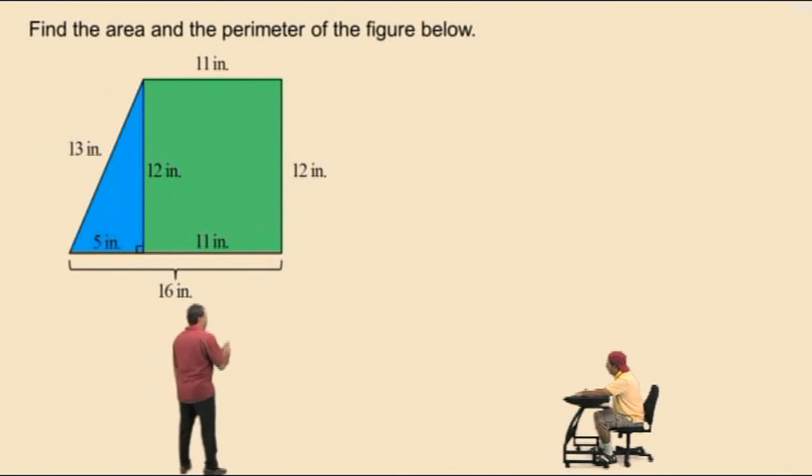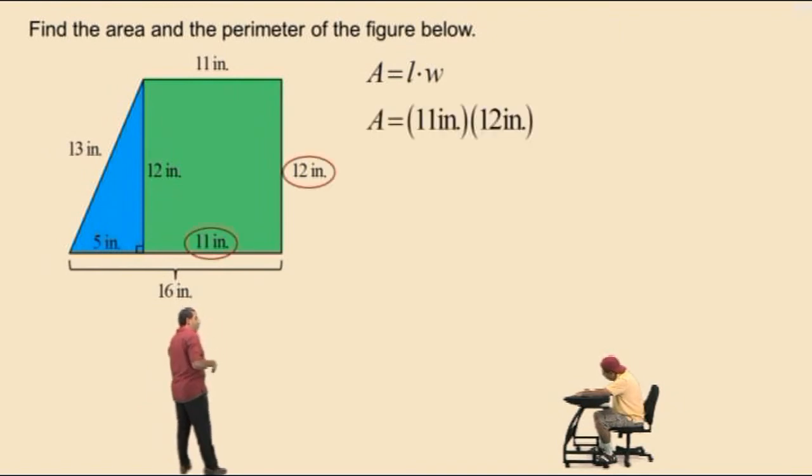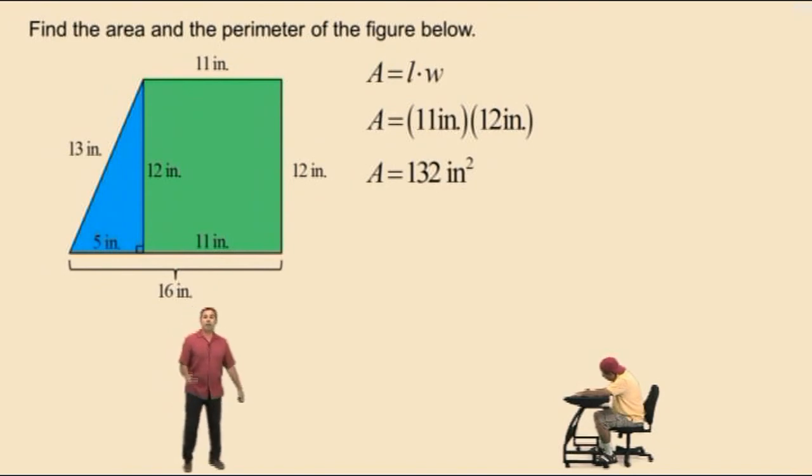So, let's find the area of the rectangle first. Area of a rectangle is length times width. So, our rectangle is 11 inches by 12 inches. What's 11 times 12, Charlie? 132. That's right. So, our area is 132 inches squared. Now, this is the area for the rectangle.